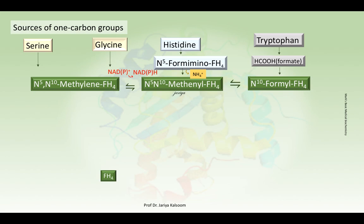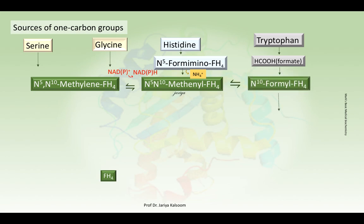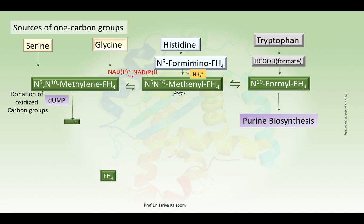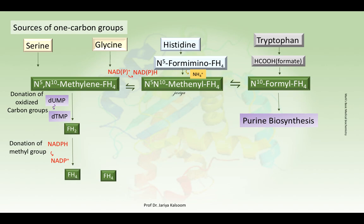Regarding the utility of these groups: the N10-formyl group from tryptophan serves to provide carbon number 2 and carbon number 8 of the purine ring. The methylene group from serine and glycine serves to convert deoxyuridine monophosphate (dUMP) to deoxythymidine monophosphate (dTMP). It may further undergo irreversible reduction to a methyl group in the presence of NADH.